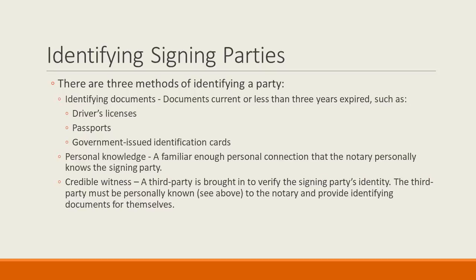Finally, if you cannot use the identifying documents or personal knowledge, you may be able to use a credible witness to identify the signing party. Both you and the signing party must have a personal connection, like with the personal knowledge requirements above, with the signing party. Additionally, the credible witness must be able to provide identifying documents for themselves as well, as with the requirements above.